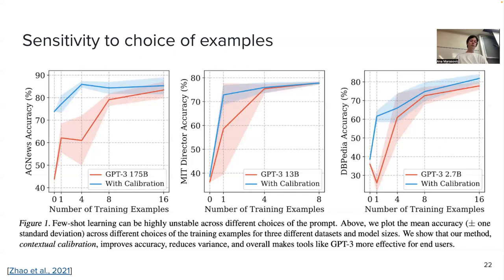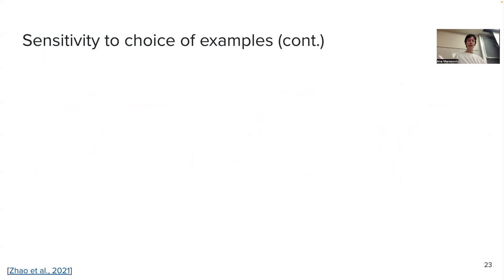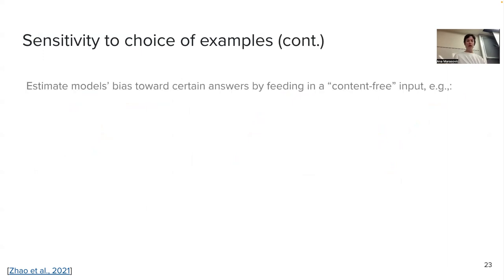We won't go into details of how they circumvent this, but it's important to realize this huge variation. Even with their proposal, you still have variation here. It's not like this was fixed — this was highlighted for GPT-3 specifically.